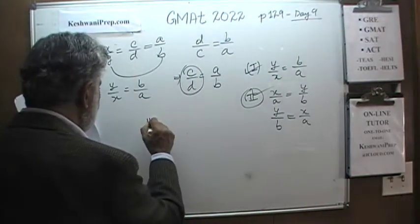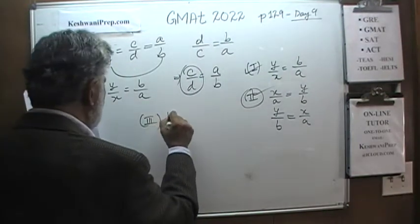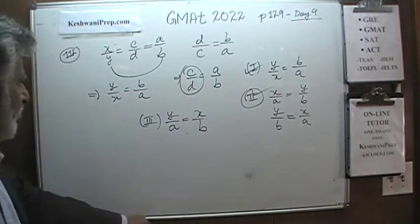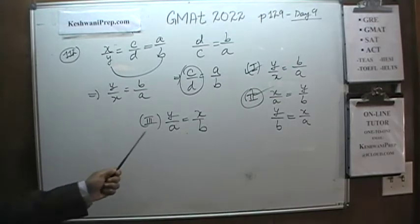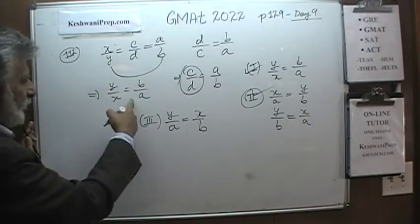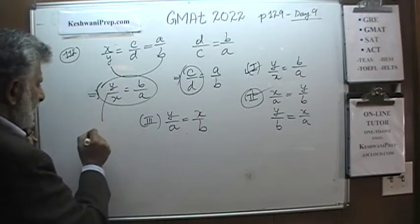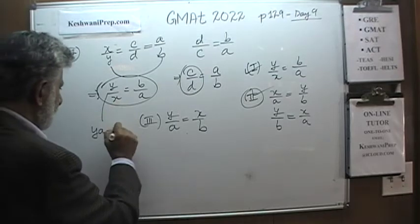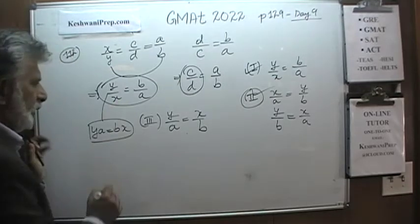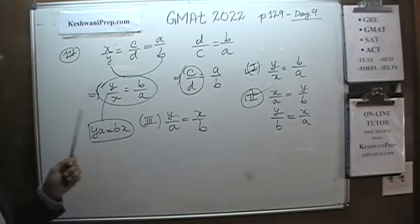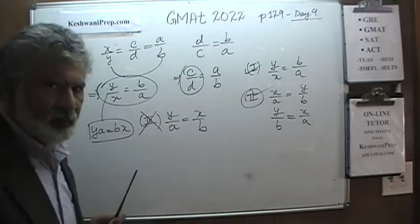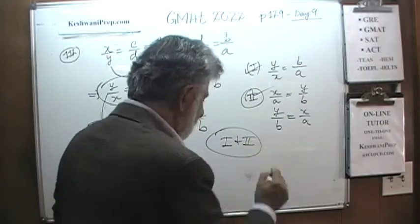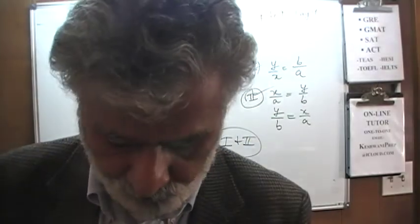Statement three says Y over A equals X over B. That is not possible. If you cross-multiply, you get Y times B equals A times X — but there is no way to derive this from our given equations. Statement three is not true. The answer is: only statements one and two are true; statement three is false.